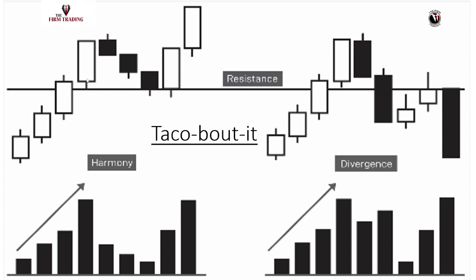We have that volume pump up - in Van's system this would be like an exhaustion candle, you're selling into strength, taking profits. At the top of a range, you're getting retail buying in and institutions selling - that combination drives high volume. Then you get that pullback with low volume because nobody's really selling. Retail that bought in doesn't want to sell, so you have that slight pullback, then institutions buy and pump again.